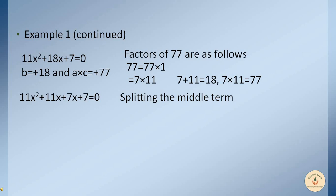Now we take 11x common from the first two terms, giving 11x(x + 1), and take +7 common from the next two terms, giving 7(x + 1) = 0. To verify the splitting is correct, both brackets should contain the same terms — since they both have (x + 1), our splitting is correct.